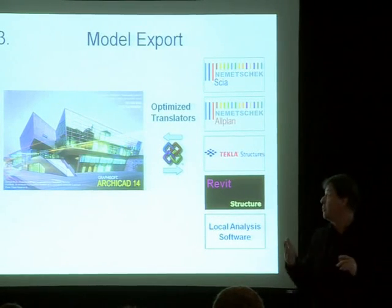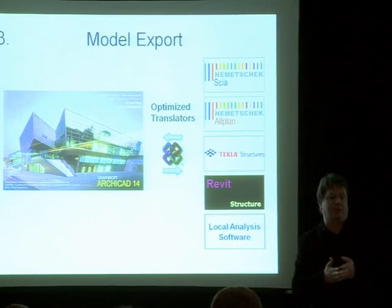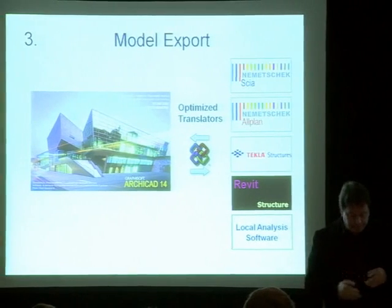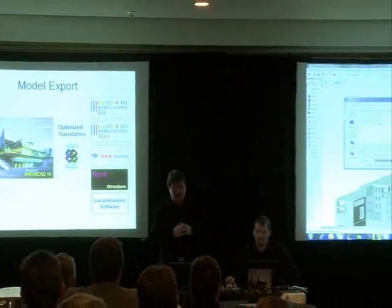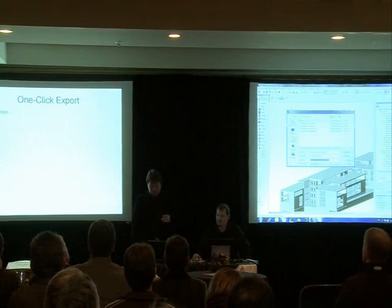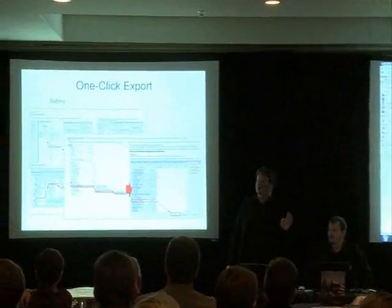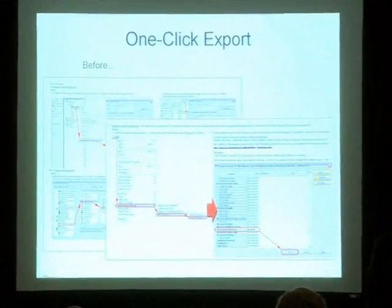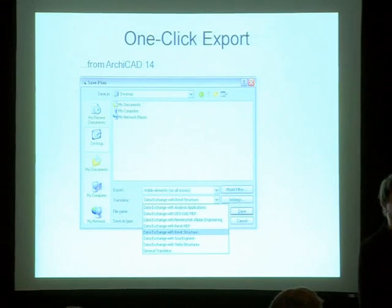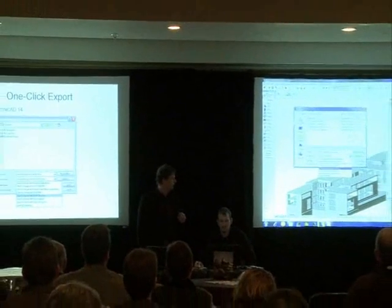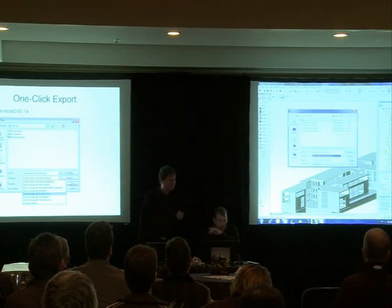Of course you don't have Nemetschek Allplan here in New Zealand, but these interpretations can differ. Wall intersections, for example, are interpreted quite differently across applications. The other important thing is to make it easy — a one-click save. This is how it looked before with previous versions when you had to save an IFC file to communicate with Revit Structure. Now let's see how it works: you have this dialog, you choose the appropriate translator after selecting the file format, and then you just click save and it is automatically exported.